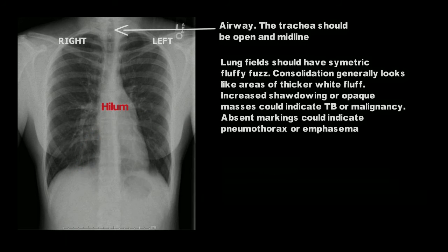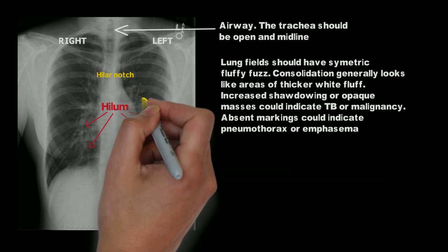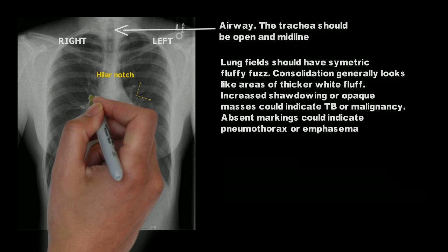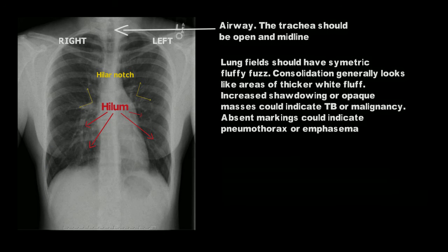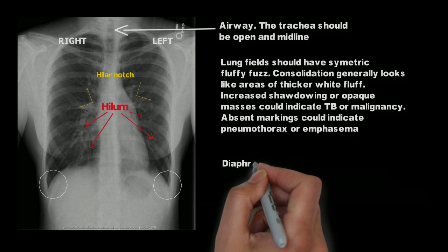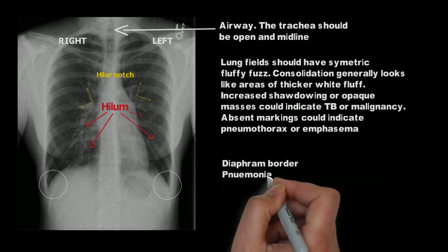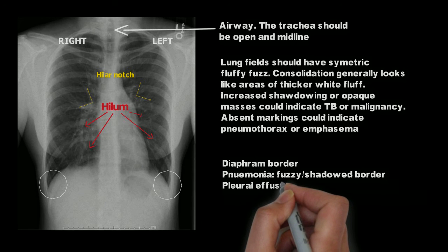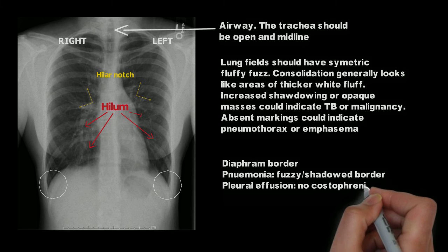Next, you'll look at the hilar structures. These are the vascular areas next to the cardiac silhouette and look more prominent because of the pulmonary blood vessels. You should see the hilar notch or hilar points on each side, usually higher in the left. Finally, down at the bottom of the lung fields, you'll see the sharply demarcated border of the diaphragm, which curves downward to make these angles called the costophrenic angles. If these aren't present, it most likely indicates a pleural effusion. If the diaphragm border isn't sharp and clear, this could indicate a lower lobe pneumonia.